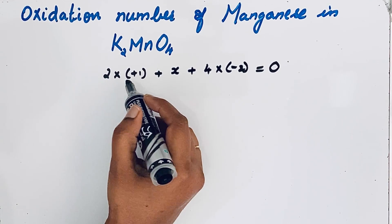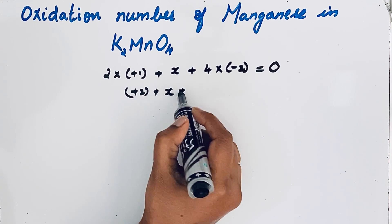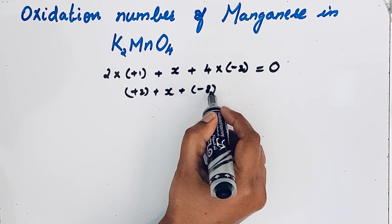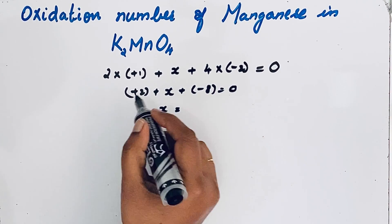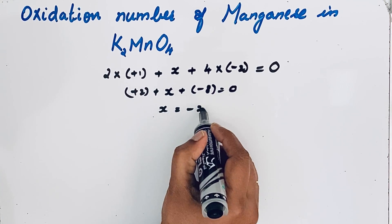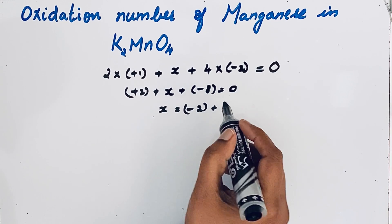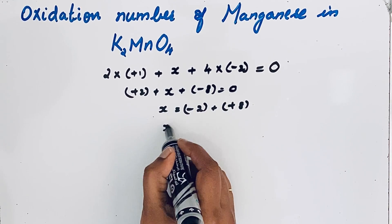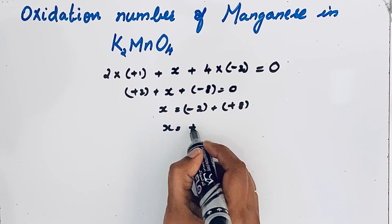So two into plus one is plus two, plus x. Four into minus two is minus eight equals zero. So let us keep x here. Plus two when it goes to that side minus two, plus minus eight when it comes to this side plus eight. So x is equal to minus two plus eight, which gives us plus six.